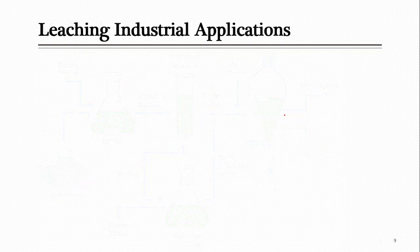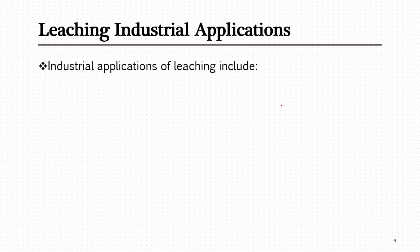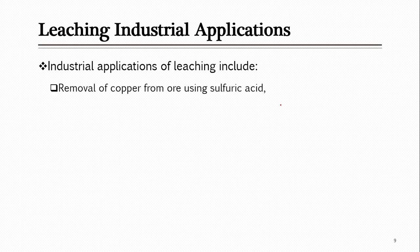Now let us look at major industrial applications of leaching. The first is removal of copper from ores using sulfuric acid. Sulfuric acid is the solvent and the ore is the solid. The ore contains copper in the form of various salts — sulfates and others — and sulfuric acid selectively extracts copper, leaving everything else as spent solid.